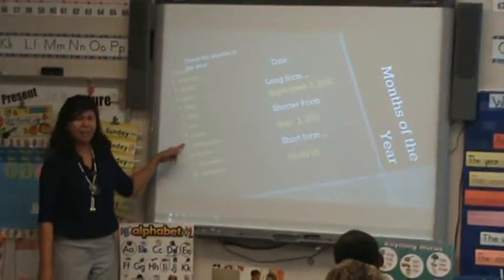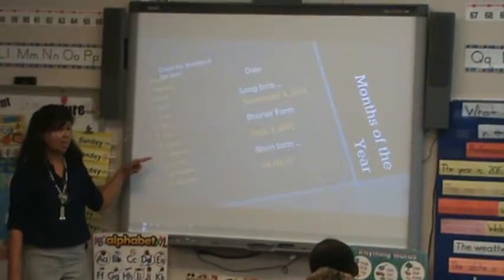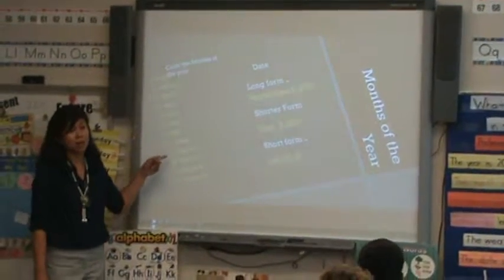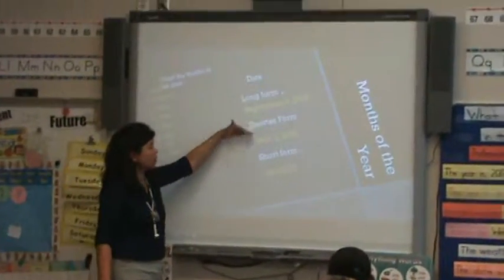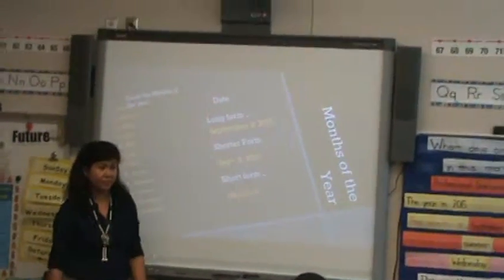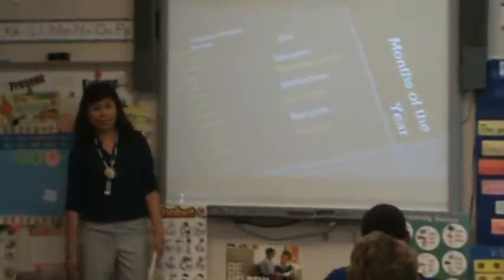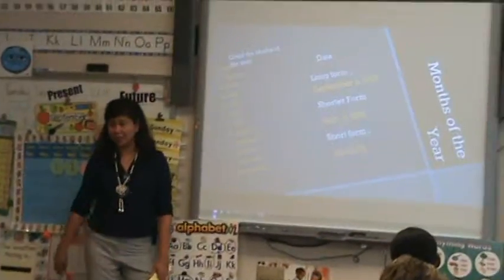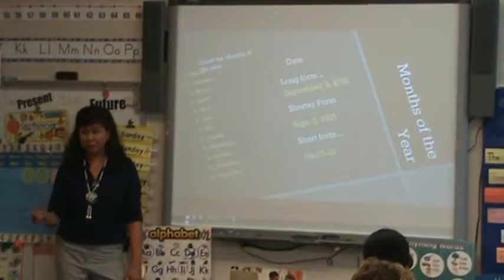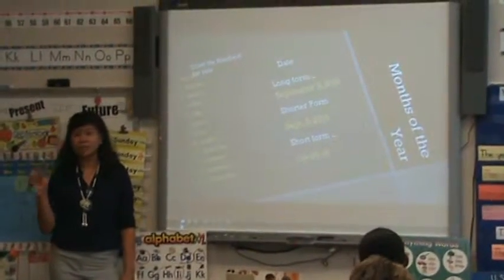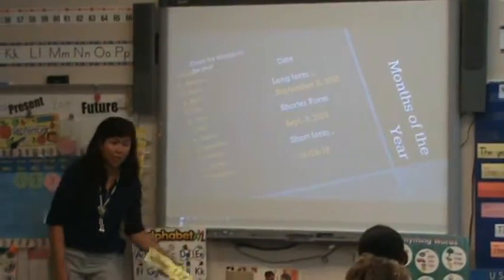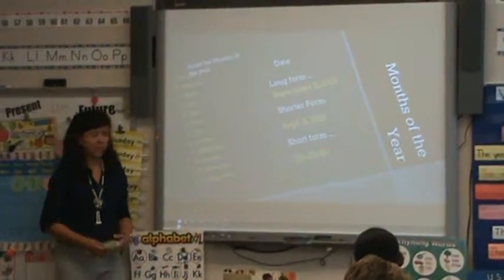So why are you number nine? Why are you number eight? Because September is the ninth month of the year. Something like that. So you give them the long, the shorter, and the shortest form. So when I say write the date, 9-3-15 or September 3, 2015, they know that. Because they always need to date their paper. Write your name and the date. Always. Okay.